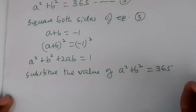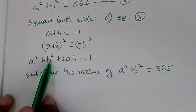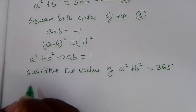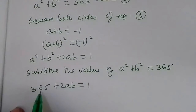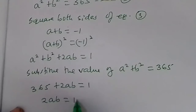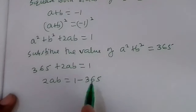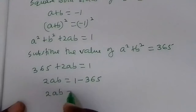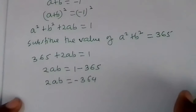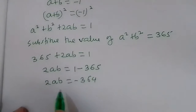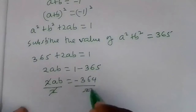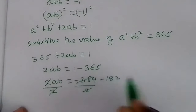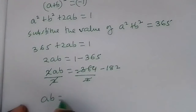We know that a squared plus p squared equals 365 from equation 5. Substituting into the expanded equation: 365 plus 2ap equals 1. Subtracting 365 from both sides gives 2ap equals 1 minus 365, which equals negative 364. Dividing both sides by 2 gives ap equals negative 182.